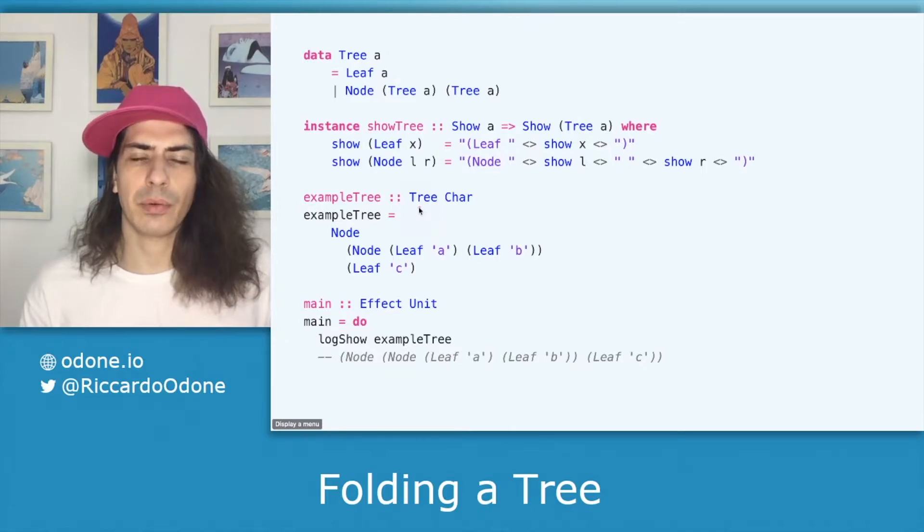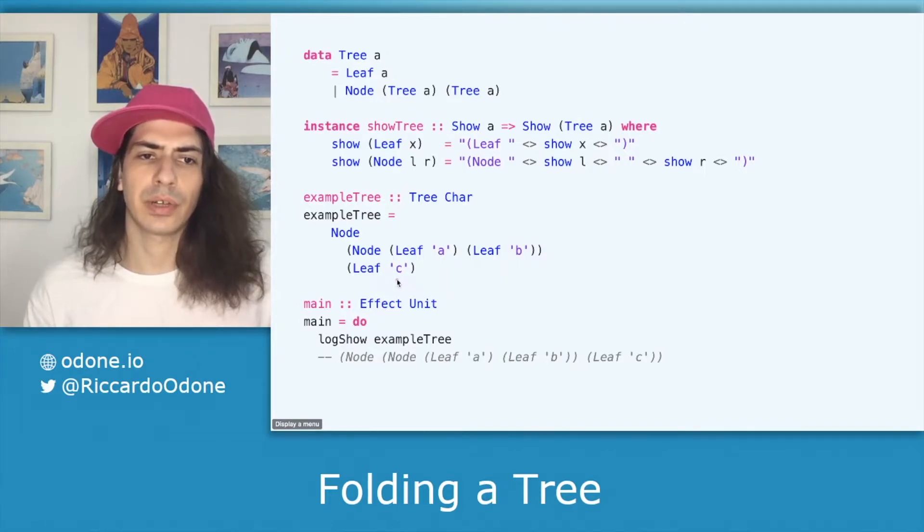Then we have our example tree which is represented by a tree on the left which contains the character A and the character B and a tree on the right which is just a leaf containing the character C.